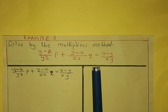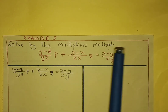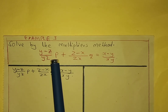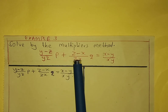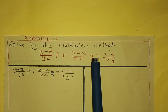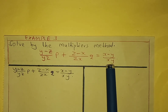Hello learners, and this is example number 3 of a problem involving solving partial differential equations using the multipliers method. The problem is: solve by the multipliers method (y-z)/yz times p plus (z-x)/zx times q equals (x-y)/xy.